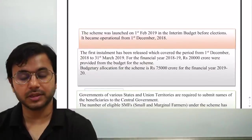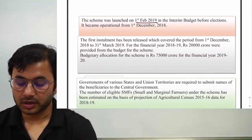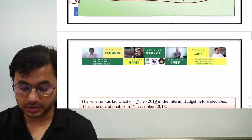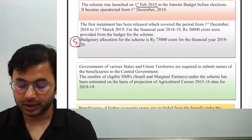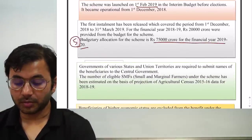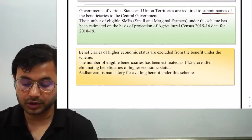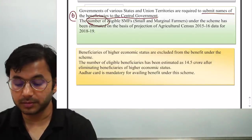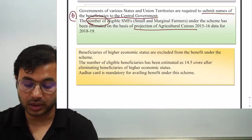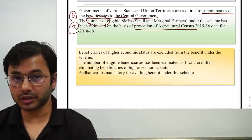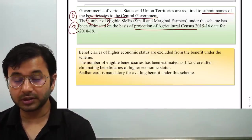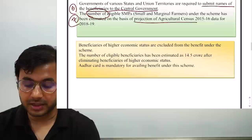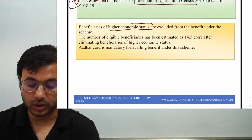The scheme was launched on 1st February. The budgetary allocation is ₹75,000 crore for financial year 2019-20. Governments of various states and UTs are required to submit names of beneficiaries to the central government. The number of eligible farmers will be estimated by the agricultural census of 2015-16. Note the difference: the agriculture census gives the number of eligible farmers, not the names — names are provided by state governments and UTs. Beneficiaries of higher economic status are excluded.